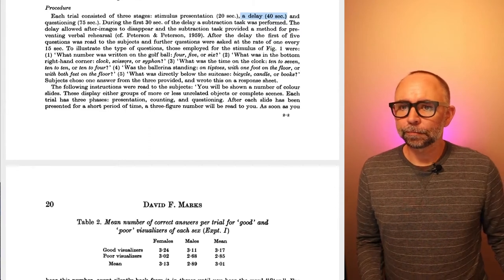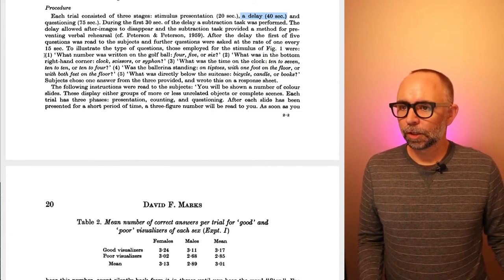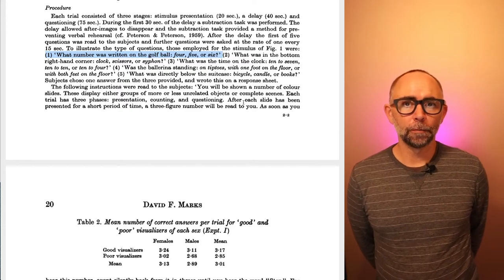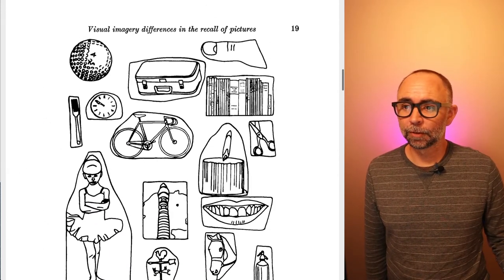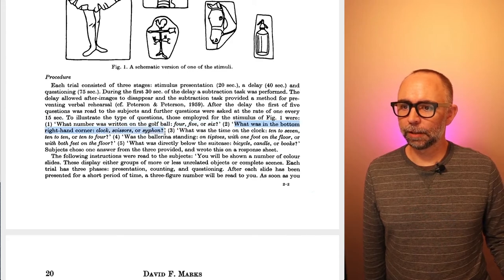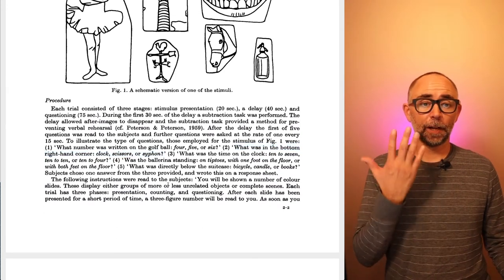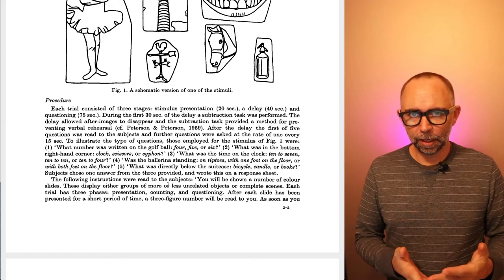After the 40 seconds, the researcher asks participants individual questions about what was in the picture. There were five questions per picture, always multiple choice. For example: what number was written on the golf ball — four, five, or six? Or: what was in the bottom right-hand corner — clock, scissors, or siphon? Once you complete all five questions for one picture, the next picture is shown and the process repeats.